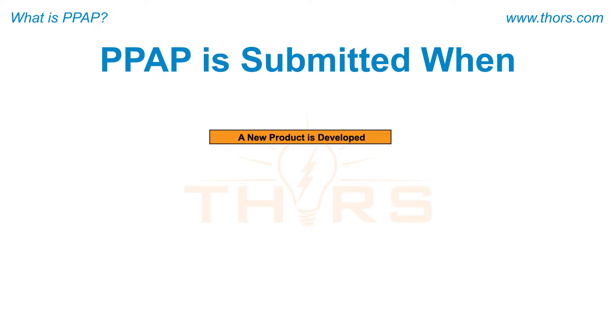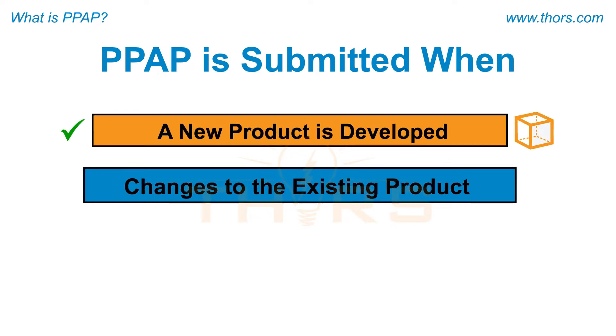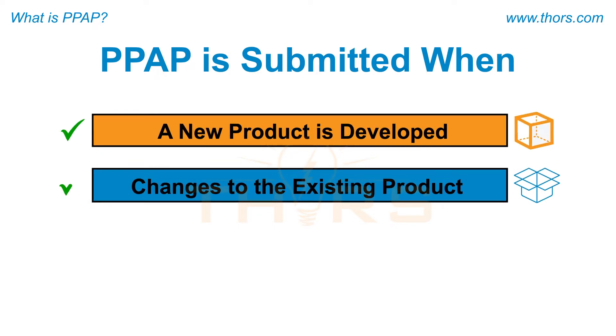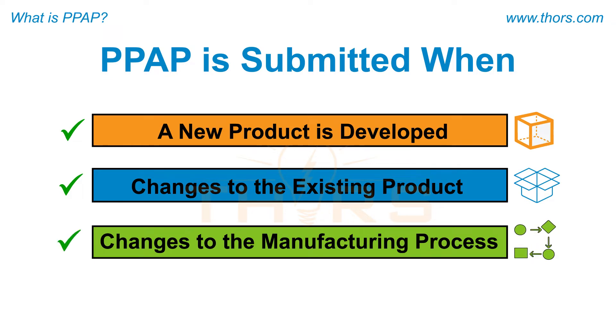PPAP is submitted when a new product is developed, when changes are introduced to the existing product, or when changes are introduced to the manufacturing process.